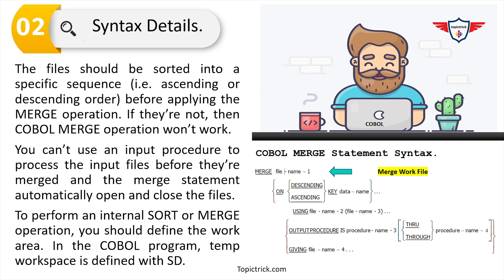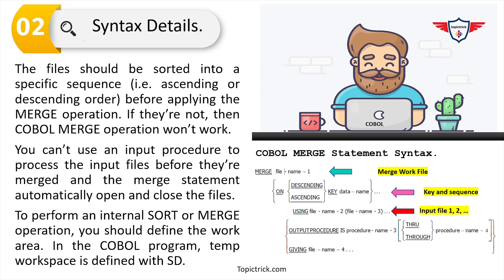The second important parameter is the key, where you specify the field used as a key. The merge program sorts records based on one or more key fields, and each key field can be sorted in ascending or descending sequence. The third parameter is input file — you specify the list of files to be merged. The fourth parameter is output file — you specify the output file that will hold the merged data. Also note that you cannot use input procedures with the merge statement, but you can use output procedures.